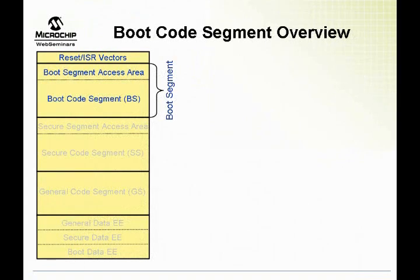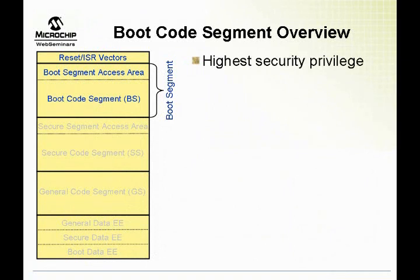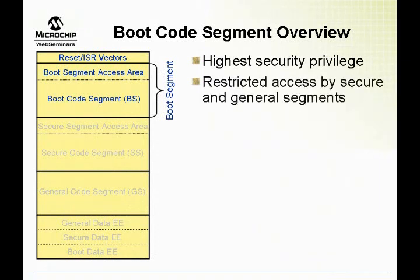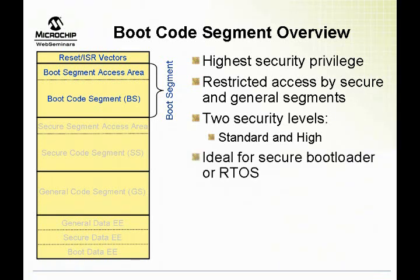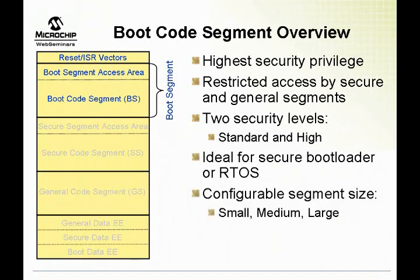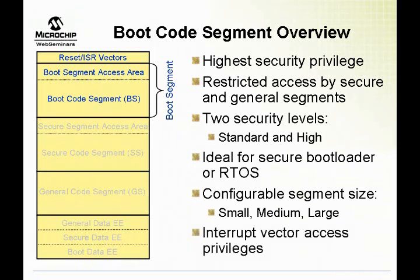The boot segment begins after the interrupt service routine vectors. Only certain operations may be performed on the boot segment by code in the secure and general segments. Access to the boot segment may be severely restricted by enabling high security. The boot segment is allowed to reprogram the interrupt vector and hence may store a secure boot loader or a secure RTOS. Erasing the boot segment will erase all other segments as well. The boot segment has configurable sizes in small, medium, and large options.